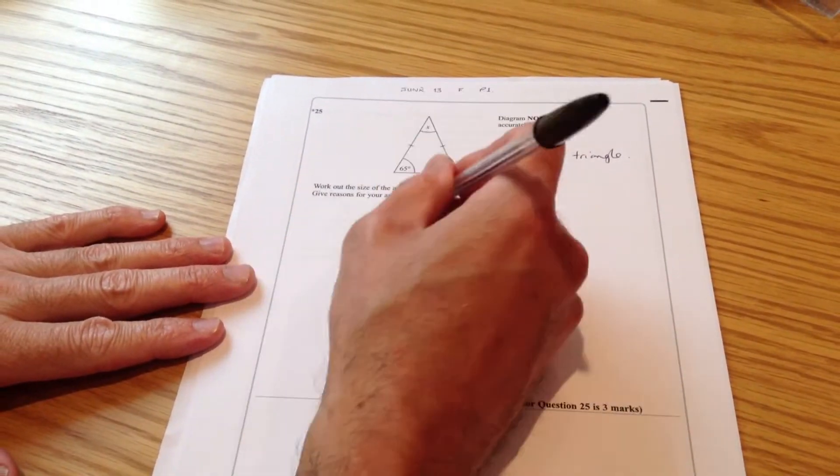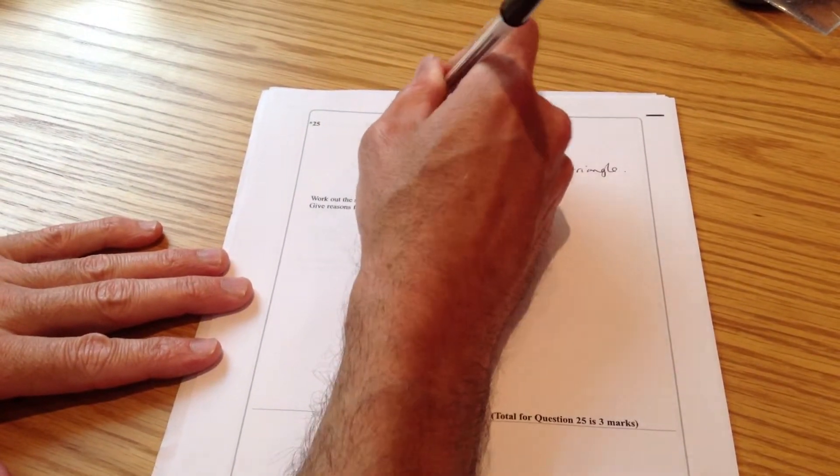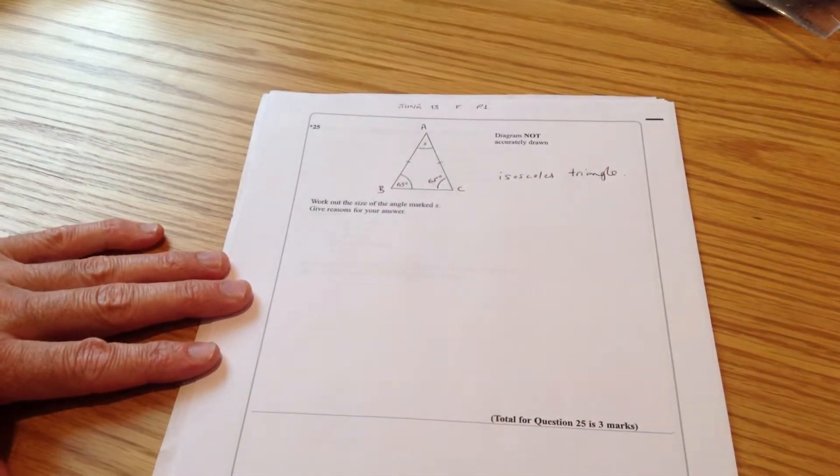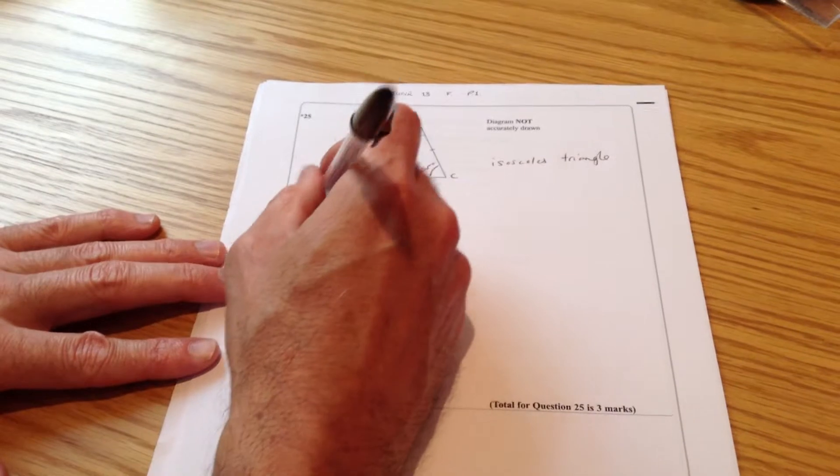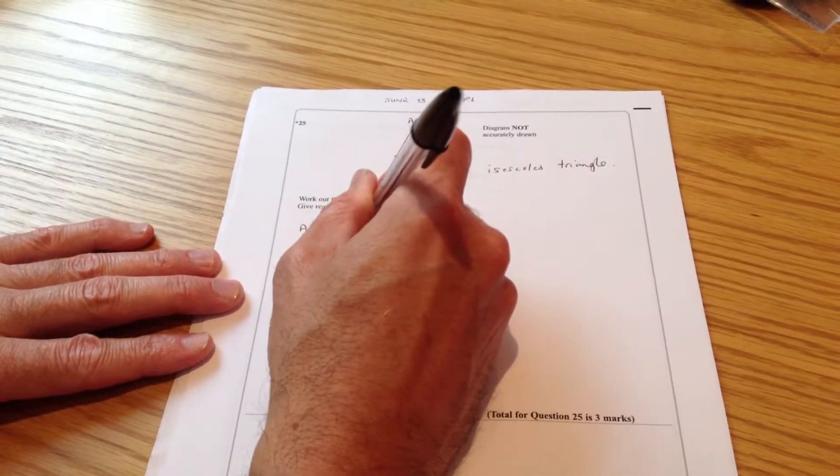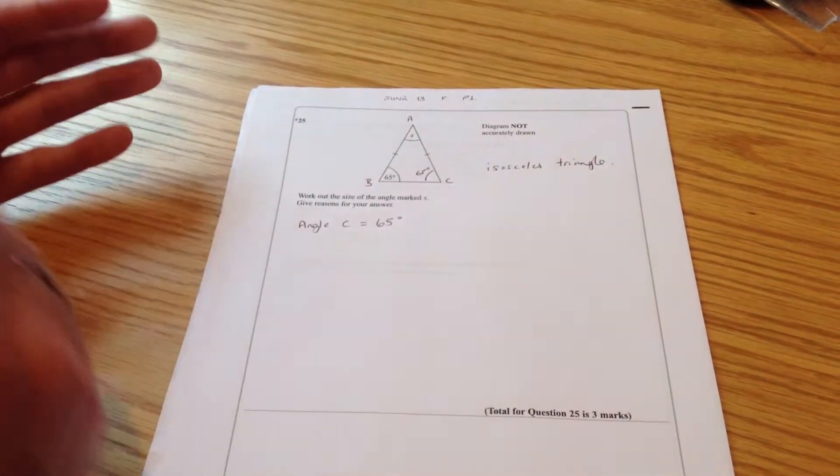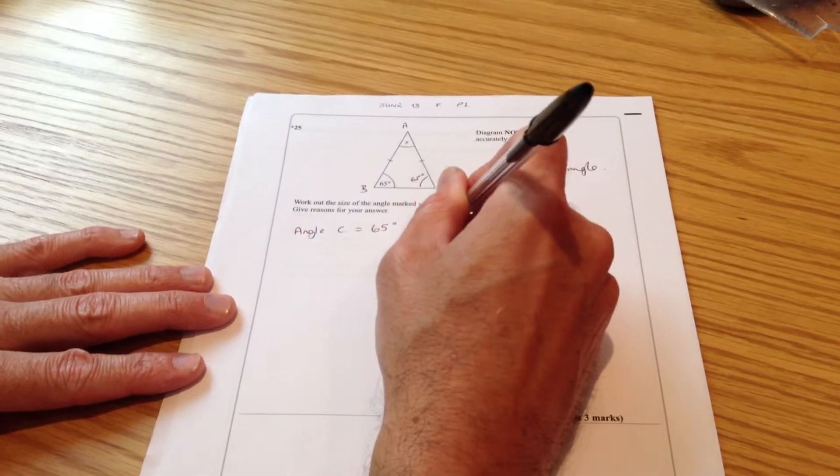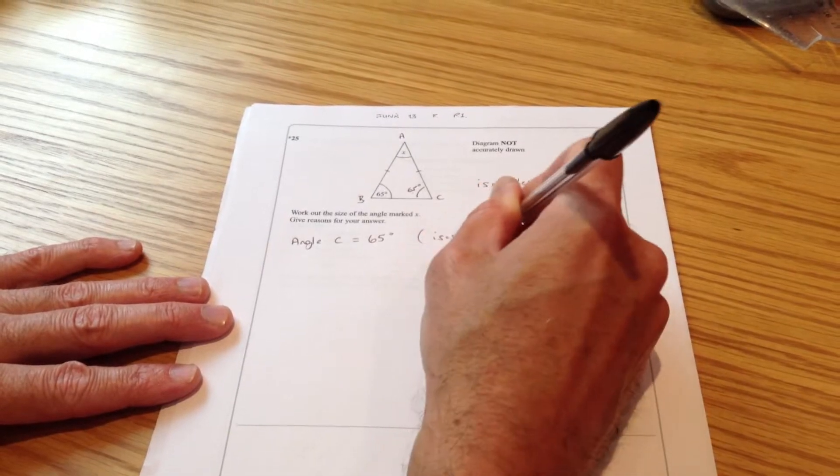First of all, what I can do is I can label my triangle ABC. Why not? So I can now say that angle C equals 65 degrees, and the reason I know that is because I'm working with an isosceles triangle.